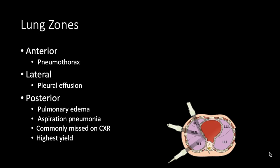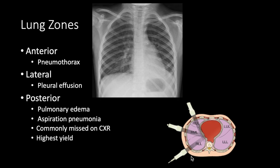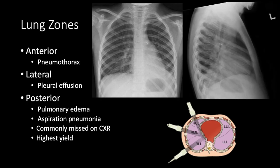Each lung zone has different usefulness. Anteriorly is where you'll most likely find a pneumothorax, because that air bubble floats toward the surface. Laterally is where we pick up a lot of pleural effusions. Posteriorly is where pulmonary edema starts — this is a very sensitive area for CHF — and aspiration pneumonia tends to start here too, commonly missed on chest x-ray. For instance, a chest x-ray may look very clear, but behind the heart or under the diaphragm there can be a consolidation that was missed. Ultrasound can look behind the heart or diaphragm and pick up these missed pneumonias.